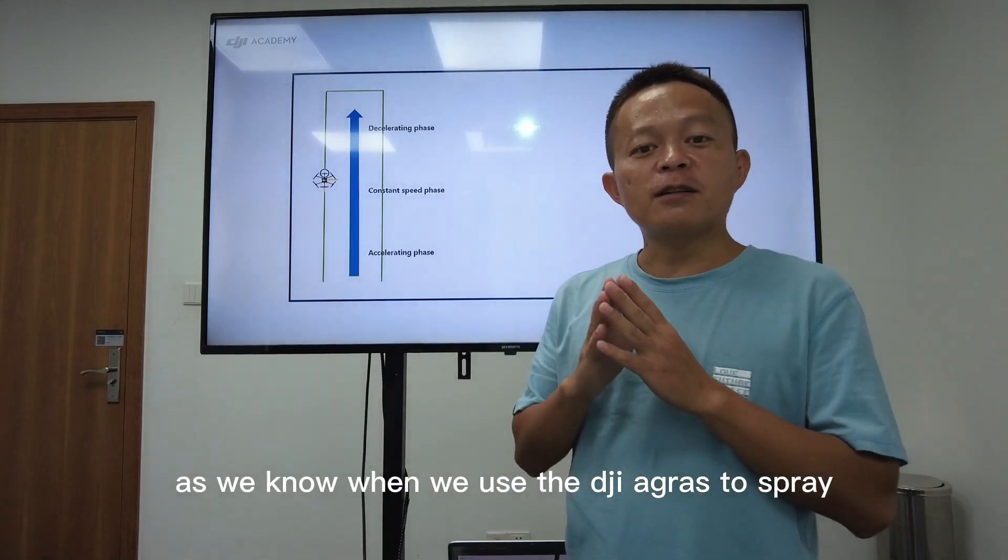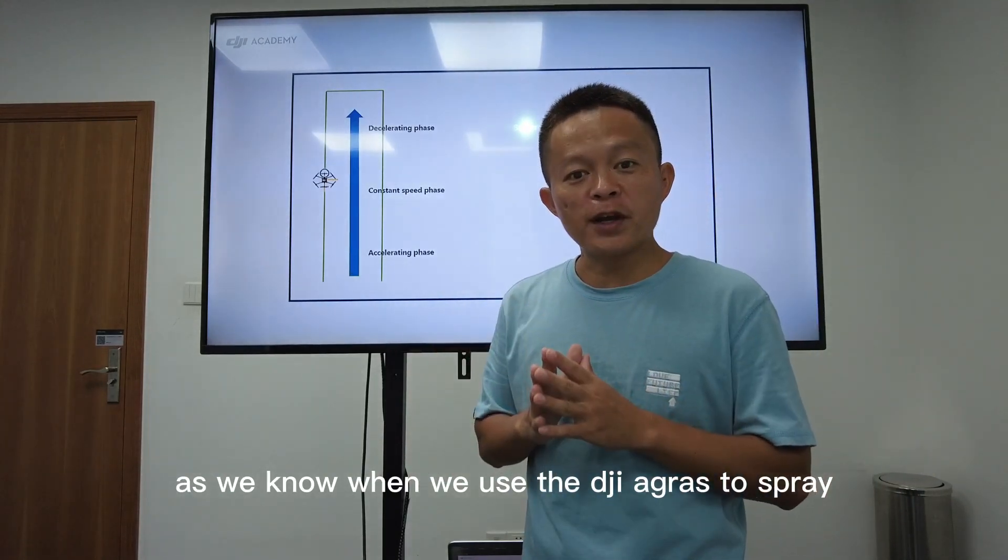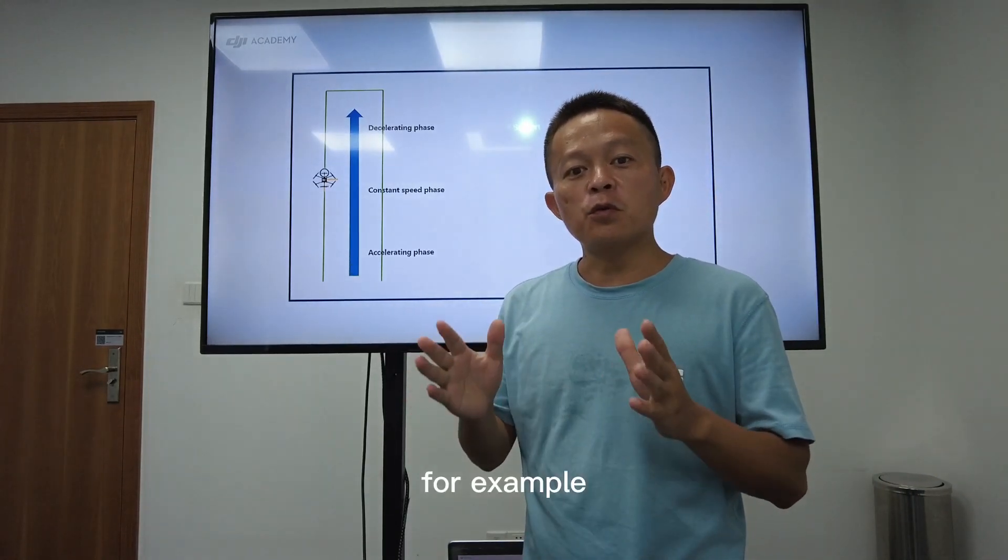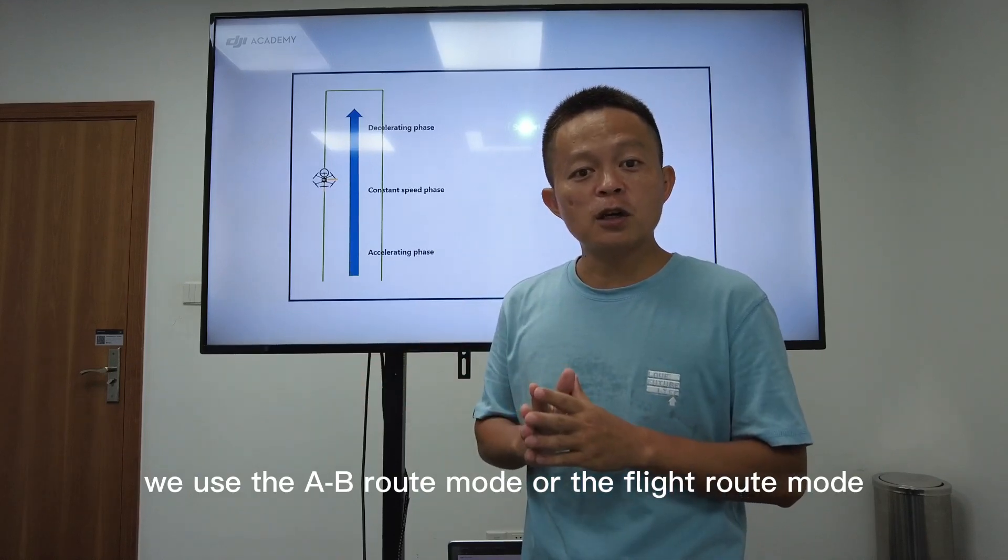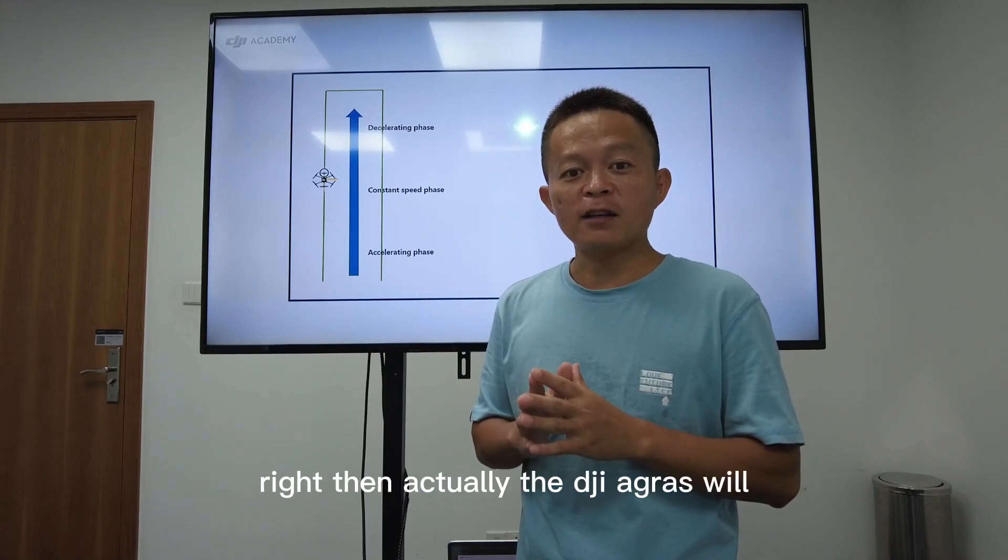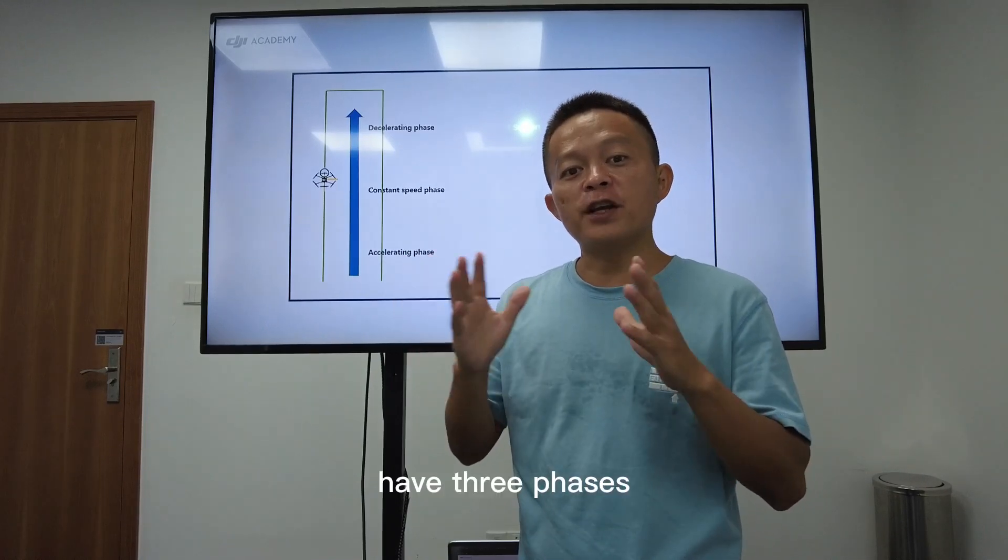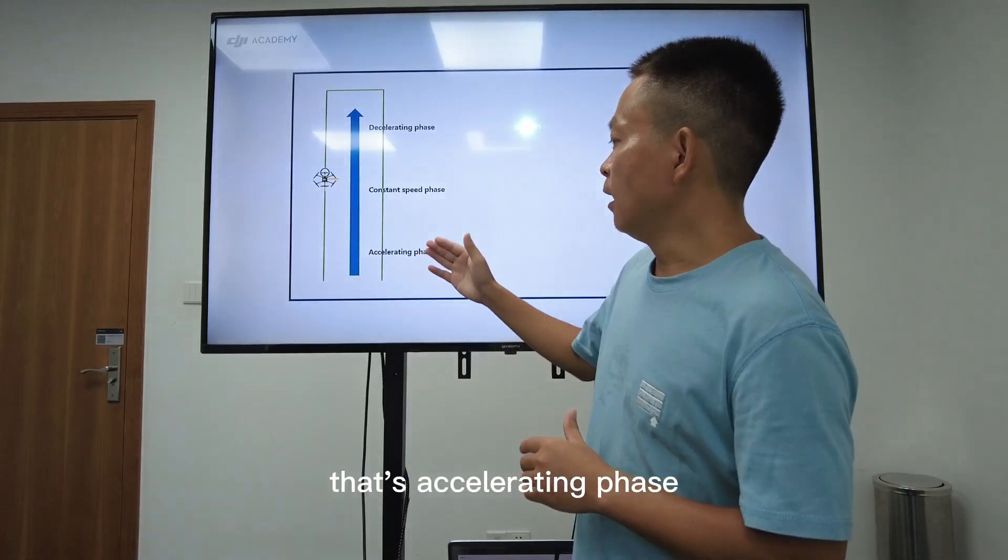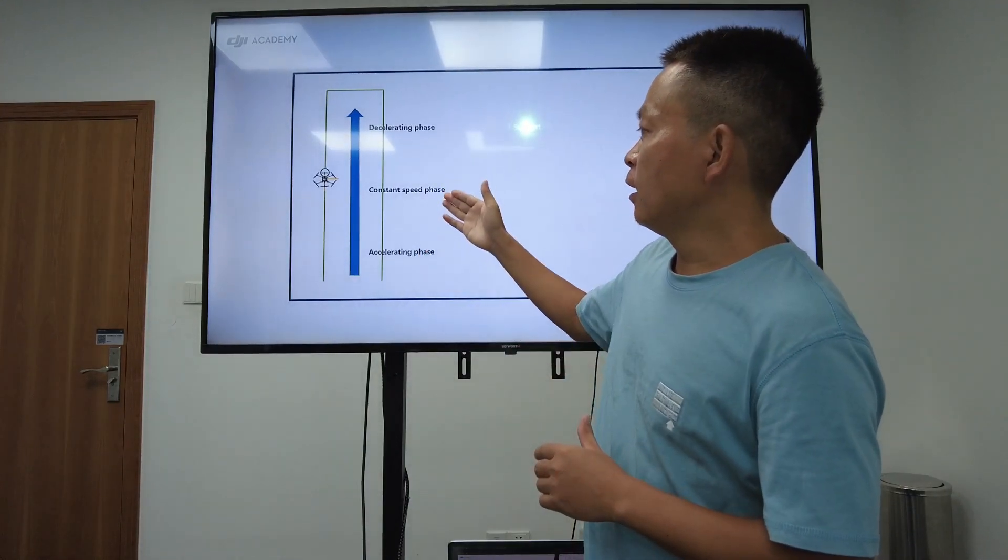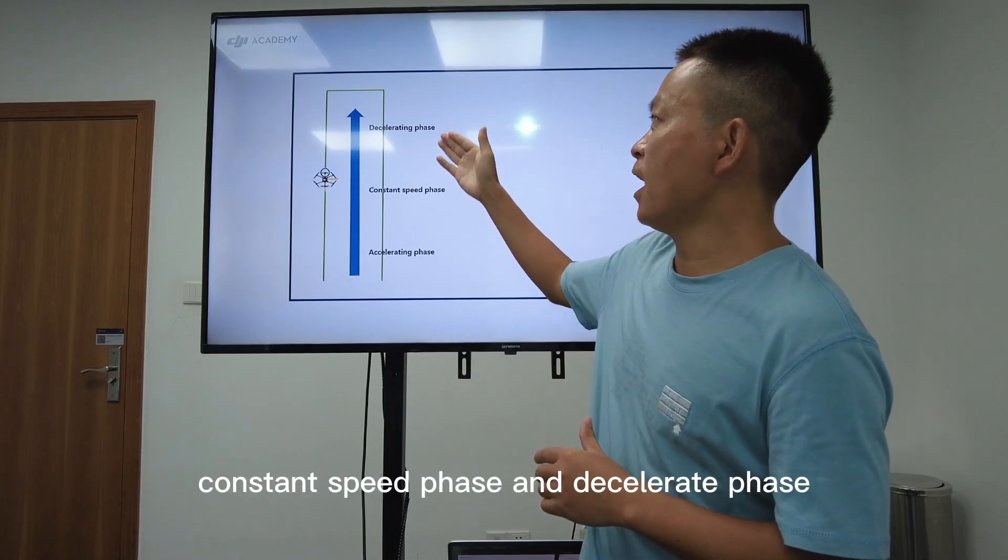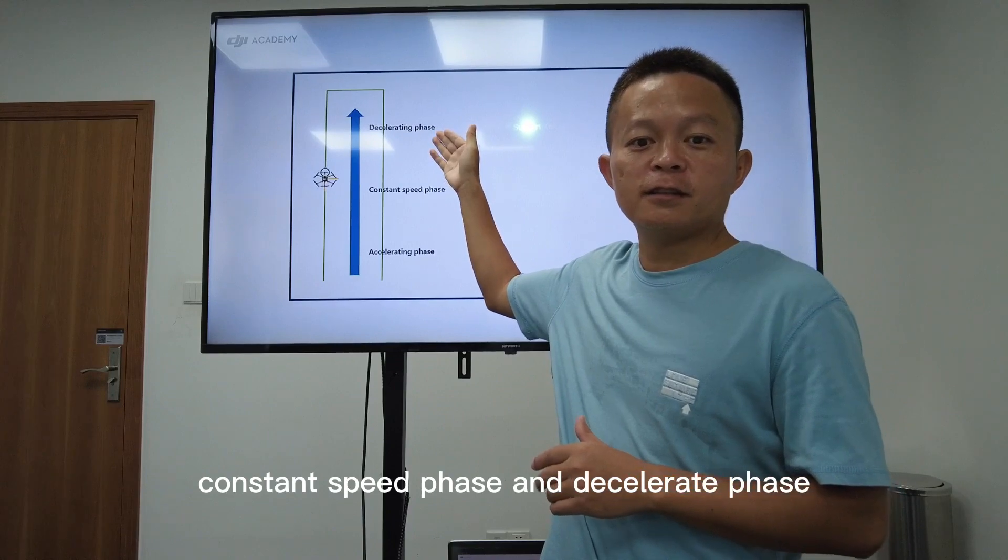As we know, when we use the DJI Agras to spray, for example we use the AB route mode or the flat route mode, the DJI Agras will have three phases: accelerating phase, constant speed phase, and decelerated phase.